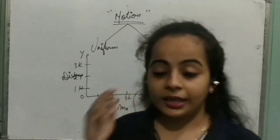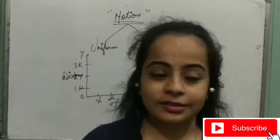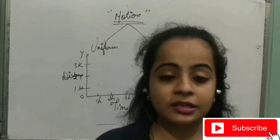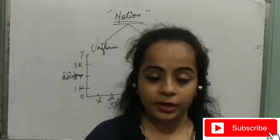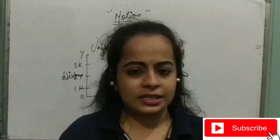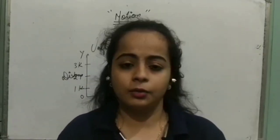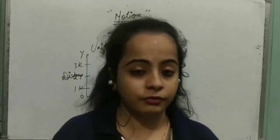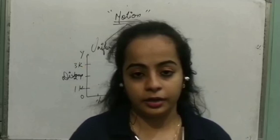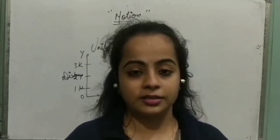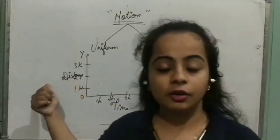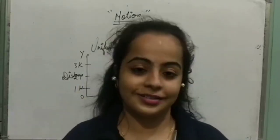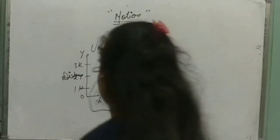If the units are mismatched — like distance is given in km and time is mentioned in seconds — first convert them. You can either convert distance to meters or convert seconds to hours; it's up to you. The answer will be the same from both cases, but the units must be consistent. If distance is in kilometers, time should be in hours.